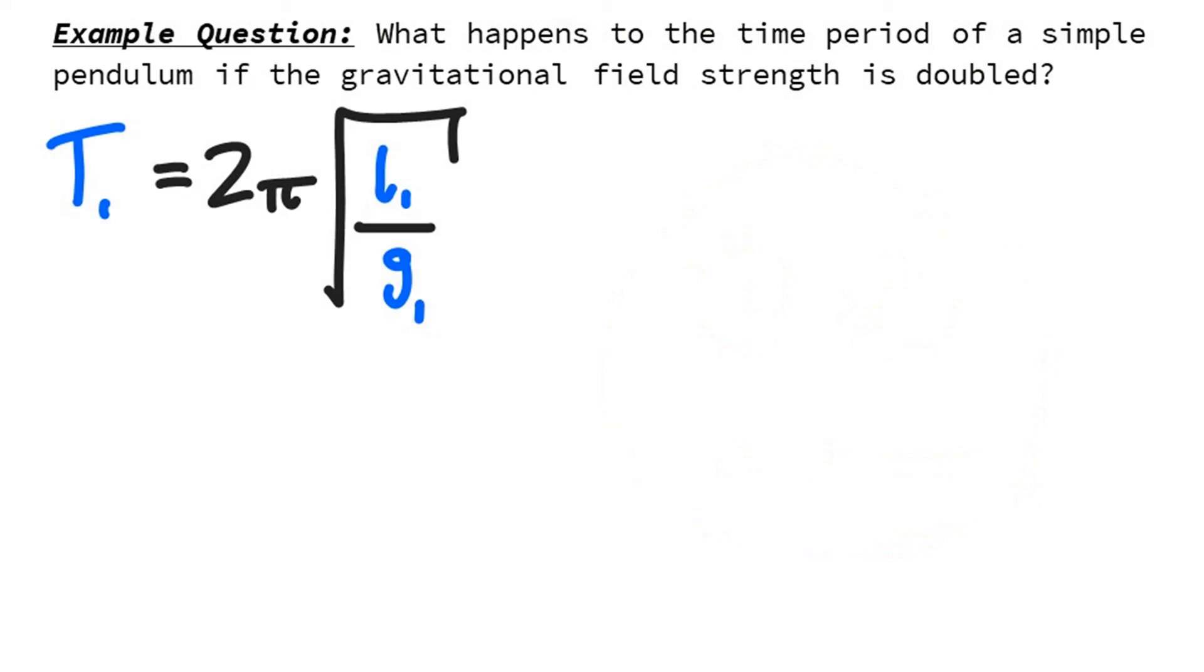L1 in the equation is just the length, which doesn't change. T1 is proportional to 1 over root g1. Because any variable that doesn't change is just another constant, and the constants stay constant.